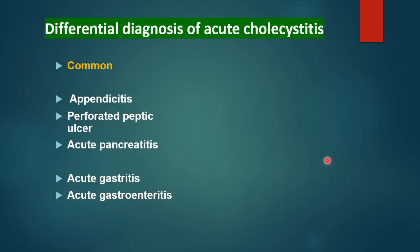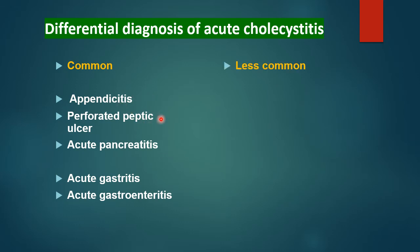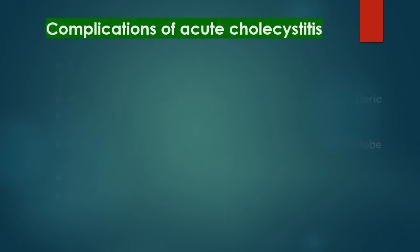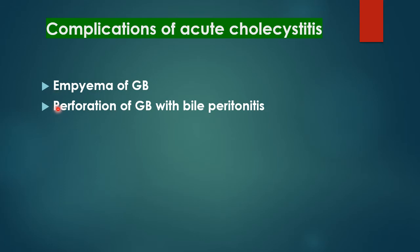Differential diagnosis of acute cholecystitis includes: acute appendicitis, perforated peptic ulcer, acute pancreatitis, acute gastritis, and acute gastroenteritis. Less common differentials include acute pyelonephritis, right ureteric colic, myocardial infarction, and pneumonia of the right lower lobe.